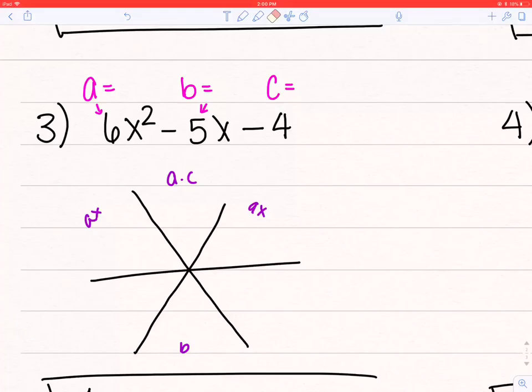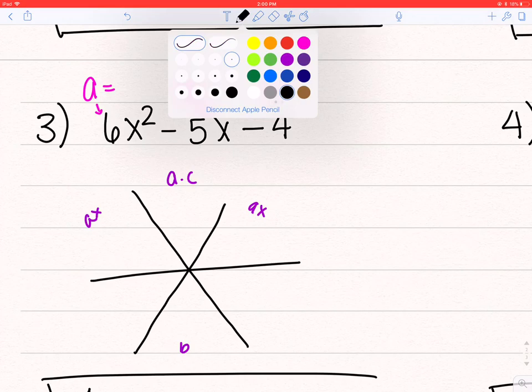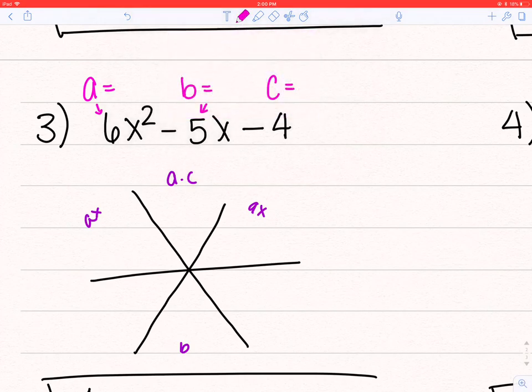So here we have Snowflake part 2. What you'll notice in these is now there is going to be a number other than 1 in front of the x-word. So I will have a number for a. First thing I do, make sure there's no GCF. 6, 5, and 4 don't have anything in common, so I go straight to Snowflake.